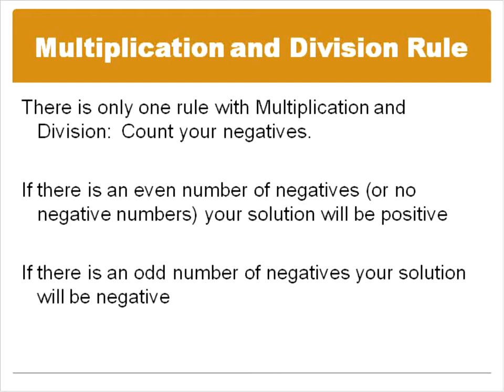It's a lot more straightforward, but it's important that you understand this and write it down. If there's an even number, it will be positive. If it's an odd number, it will be negative. Let's look at a couple of examples using multiplication and division.